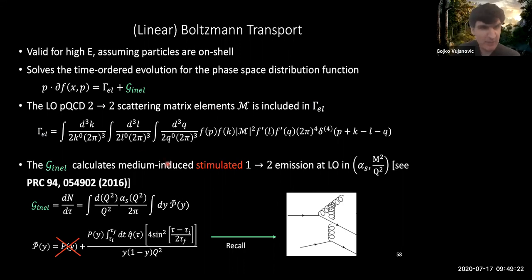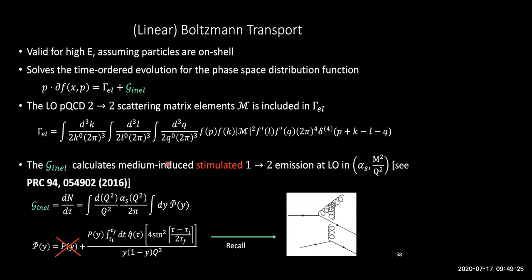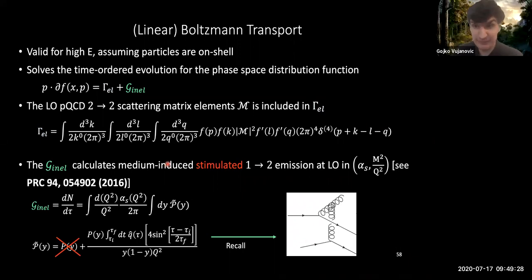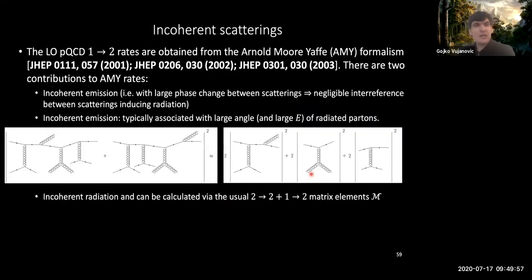The inelastic piece, or the radiation piece, is essentially going to be a medium-induced stimulated emission. And that, of course, in the case of LBT, what you can use is that you can use the modified splitting function that we have already discussed. But only, of course, the medium piece because this is stimulated emission. So it's because you have a presence of the medium that you're stimulating the extra emission. So therefore, you're only interested in this part of the splitting function, not the other one. Because the other one is in the vacuum. So these are two essential ingredients that enter into LBT.